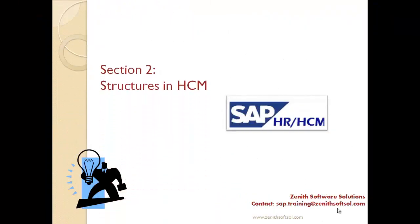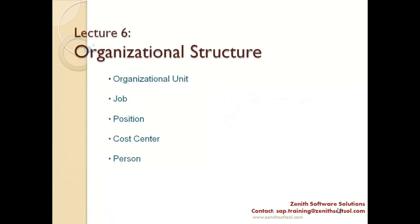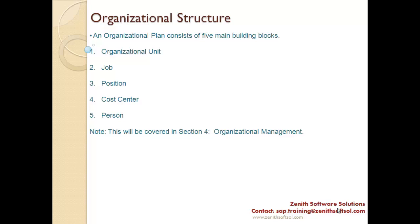Today we are going to understand what is organizational structure. An organizational structure is made of organizational unit, job position, cost center, and person. This is the third structure in HCM — the first was enterprise structure, the second was personal structure, and this is organizational structure.